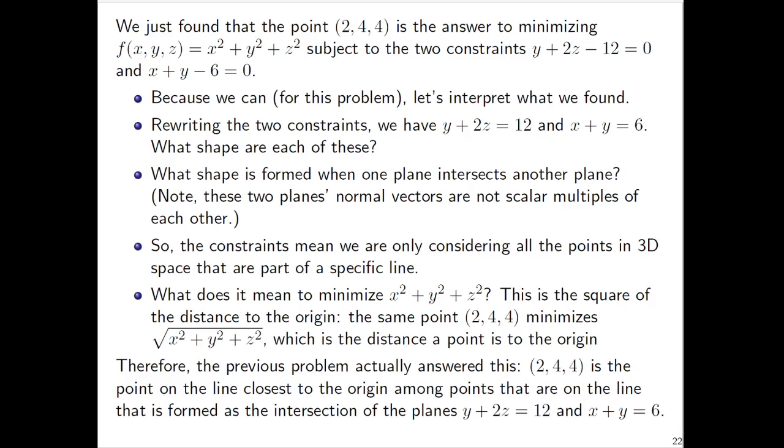So here's the funky thing that we actually did. What we really did, if we interpret it geometrically - and normally we don't have the luxury of doing this, but this problem was nice enough - is that we found that there is a certain line which is formed as the intersection of two planes. And on that line, the closest point to the origin happens to be the point (2,4,4).